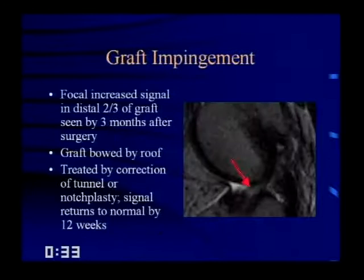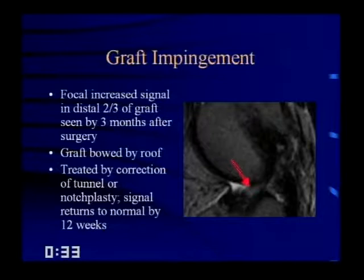To diagnose notch impingement, draw the tangent lines and do the measurements. Look for focal increased signal in the distal two-thirds of the graft — at least in the intra-articular portion — by three months after surgery. The graft can appear bowed by the roof. This is treated by correction of the tunnel or notchplasty, and the signal should return to normal within about three months.